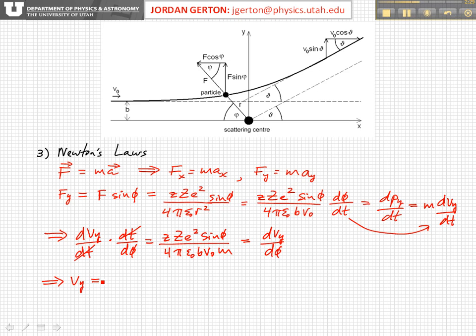So we find that vy is equal to minus little z, big Z, e squared, and now cosine of φ—I'll put that here, cosine of φ—over 4π ε₀ b v₀ m, and then plus an integration constant c.